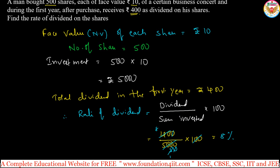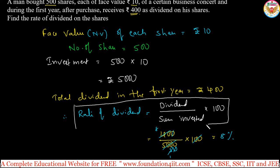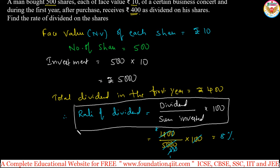According to this formula, we can straight away apply the values. The sum invested is already given — investment is number of shares into each share price, and each share costs ₹10. This is the way we can find the rate of dividend. Let us see more topics also.